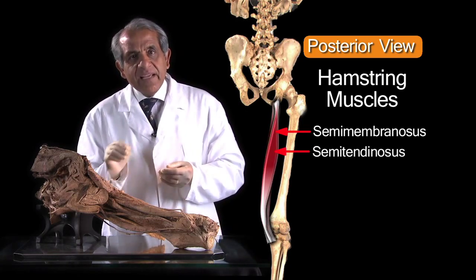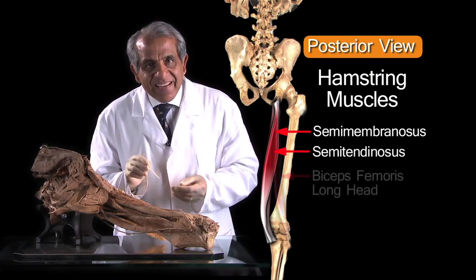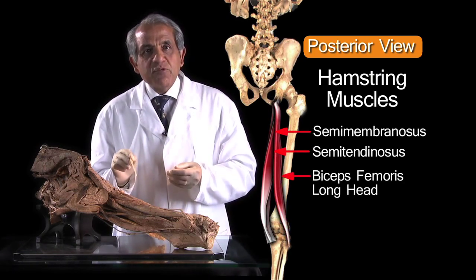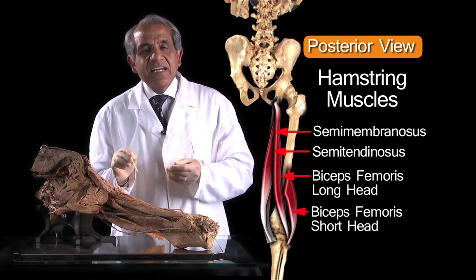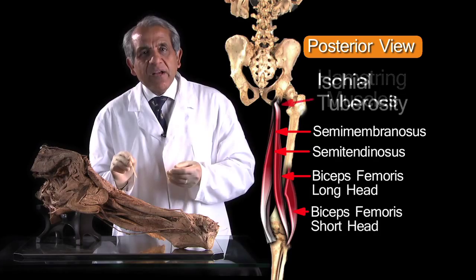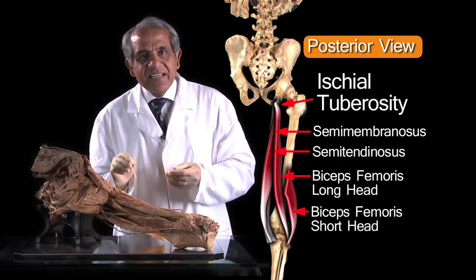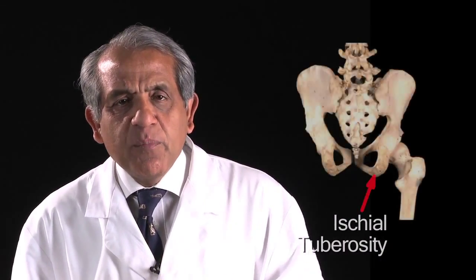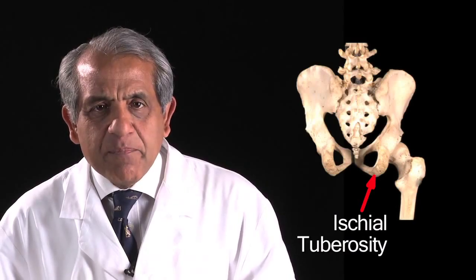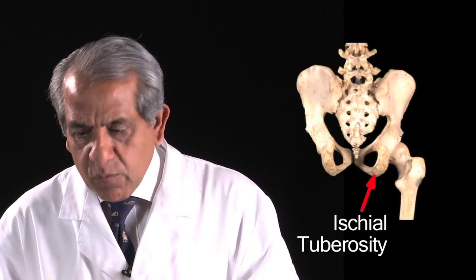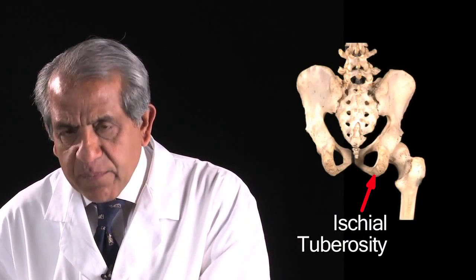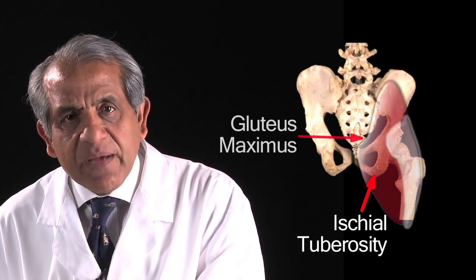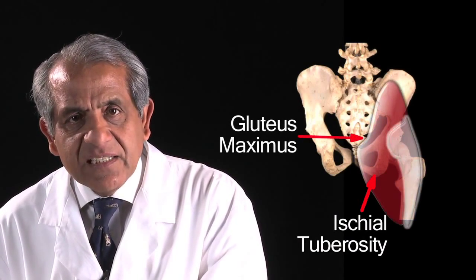Proximally, or superiorly, the hamstring muscles attach to the back of the ischial tuberosity. The ischial tuberosity is a bony prominence on the hip bone, which is overlaid by the gluteus maximus muscle.